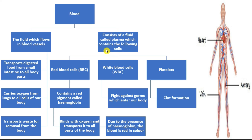Blood consists of a fluid called plasma, and plasma contains red blood cells, white blood cells, and platelets. Let's discuss each of these in detail.